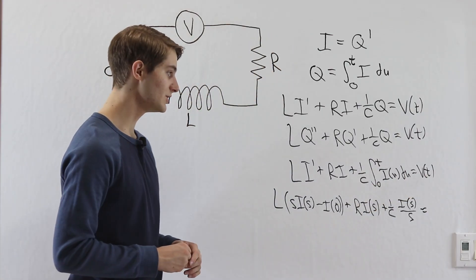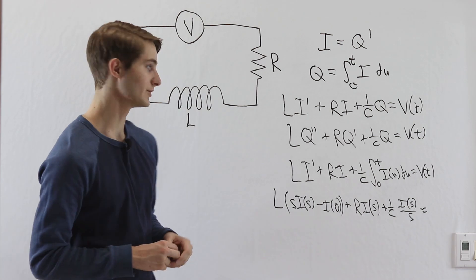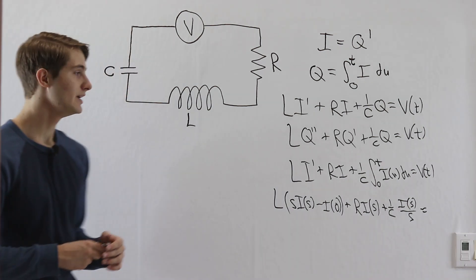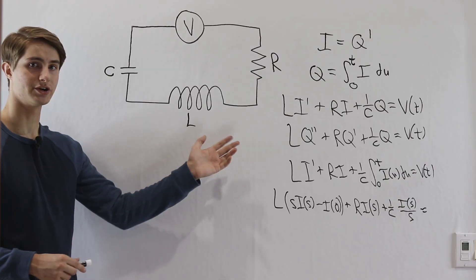And this is going to be equal to whatever the Laplace transform of v of t is. So we can go through this whole differential equation, solve it, and then take the inverse to go back. So that is how we can use our differential equation methods in the case of RLC circuits.